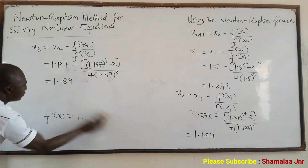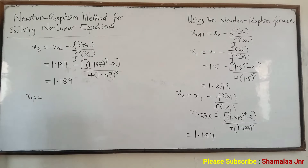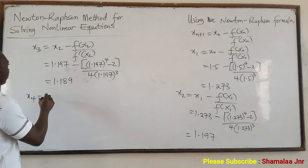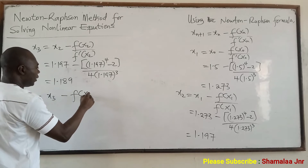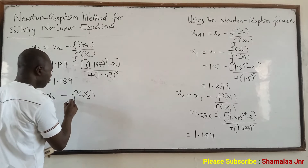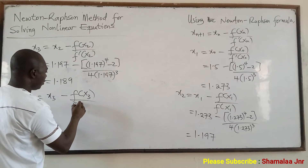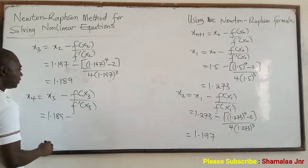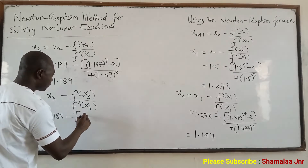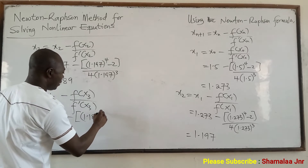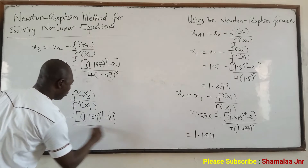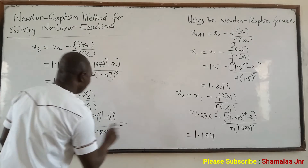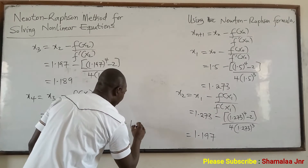Now let's continue. X4 means that N is equal to 3. So this one is going to be X4 = X3 minus F of X3 over F prime of X3. X3 is 1.189. Putting 1.189 in the function: 1.189 raised to the power 4 minus 2, all over 4 times 1.189 raised to the power 3. And if you work on this one, you should get 1.189.